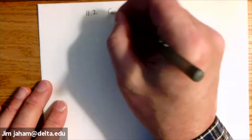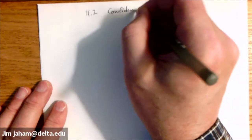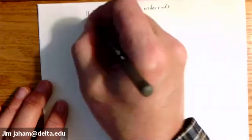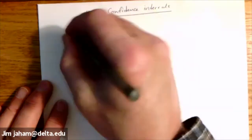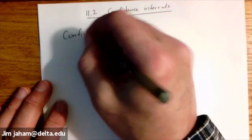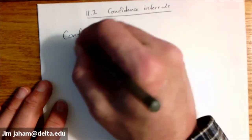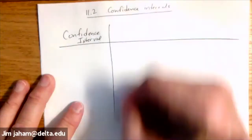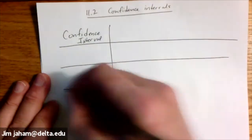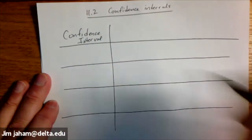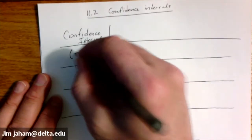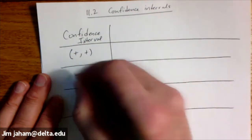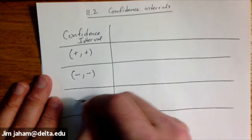Section 11-2, confidence intervals. Once again, any confidence interval that you can construct in this setting will take one of three shapes. The confidence interval will be a positive and a positive, a negative and a negative, or a negative and a positive.